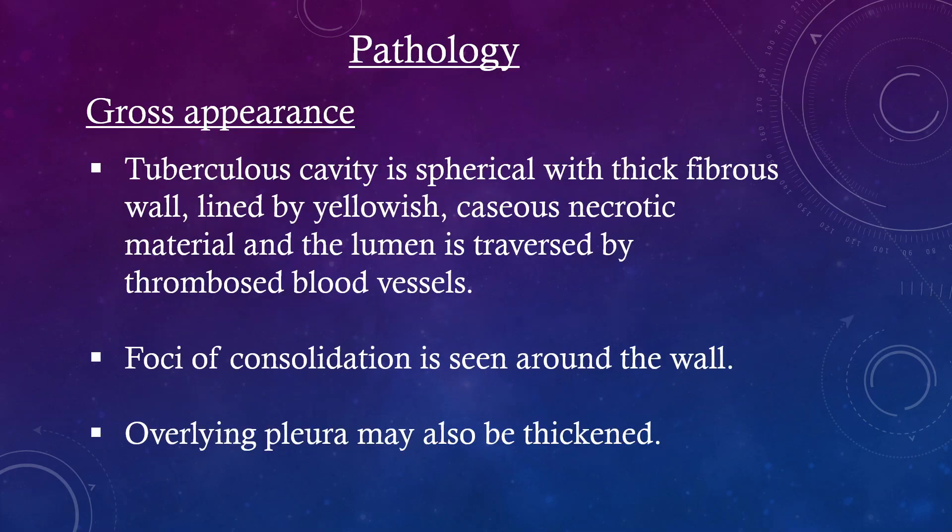Pathology — Gross appearance: The tuberculosis cavity is spherical with a thick fibrous wall lined by yellowish caeous necrotic material, and the lumen is traversed by thrombosed blood vessels. Foci of consolidation are seen around the wall. Overlying pleura may also be thickened.